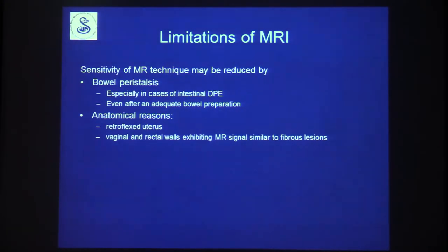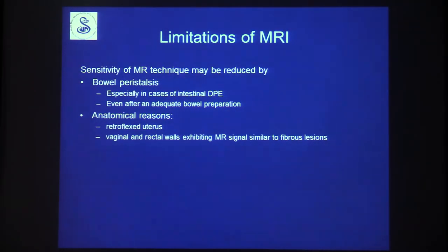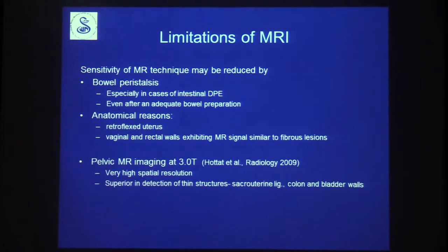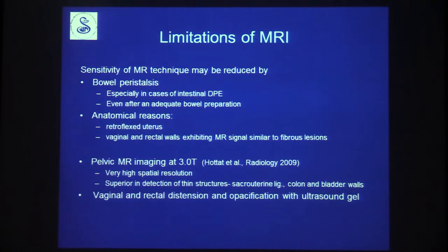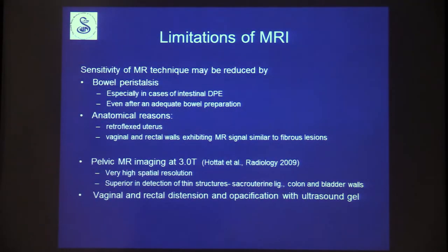MRI has limitations: sensitivity can be reduced by bowel peristalsis even after adequate bowel preparation. A retroflexed uterus is problematic, and small foci in the rectovaginal septum are very difficult to see because the vaginal and rectal walls appear fibrotic on T2 images. 3T MRI is promising and may be superior in detecting thin linear structures such as ligaments. Opacifying and distending the vagina and rectum with ultrasound gel can be considered.